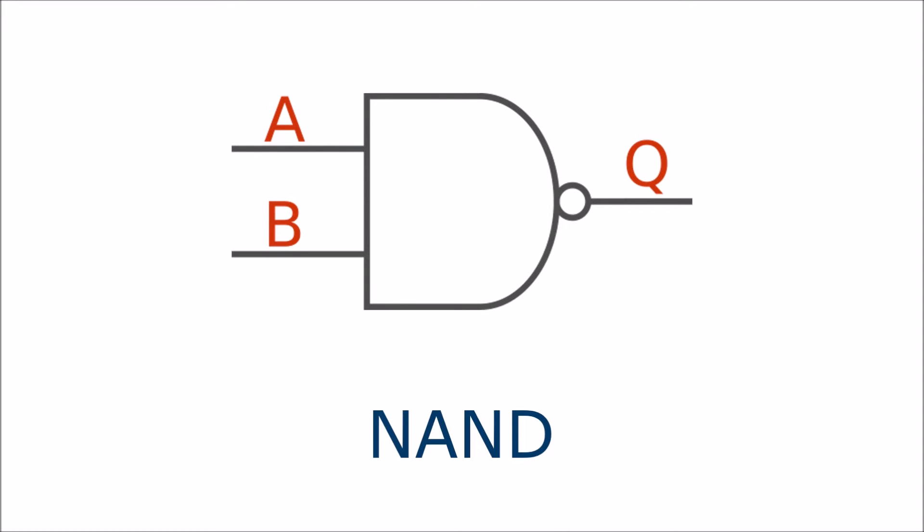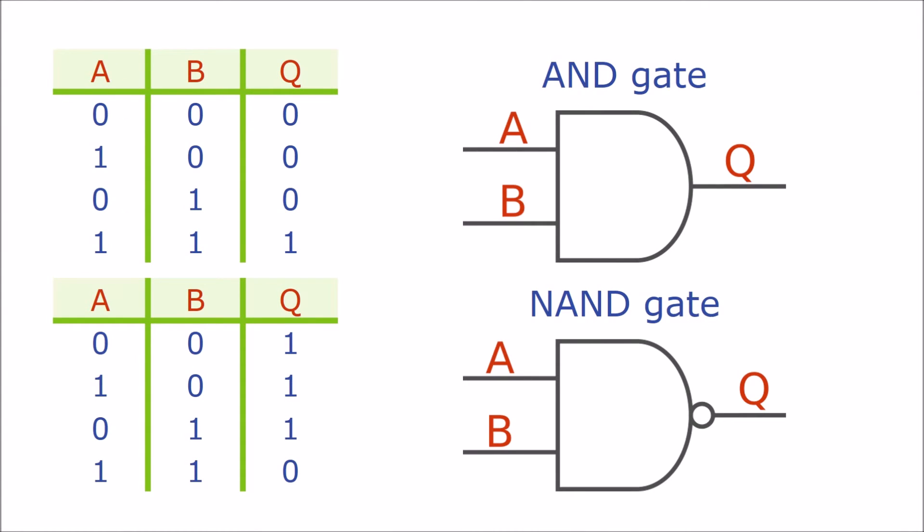Here is the AND gate truth table compared to the NAND gate truth table. As you can see the output is the opposite of what you would get from a normal AND gate.